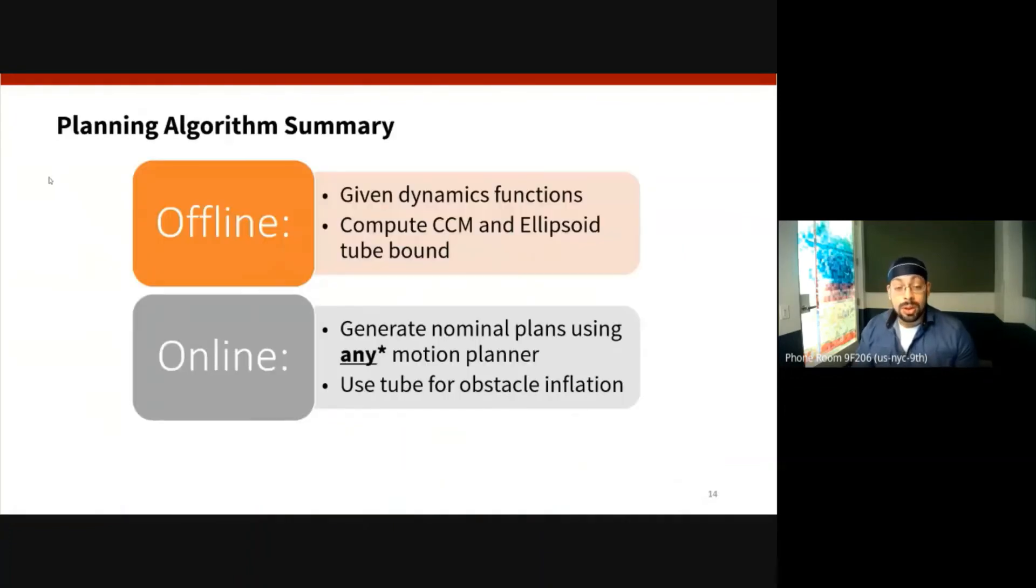So as an example, I'll actually show how this entire pipeline works, but you can roughly decompose the entire robust planning framework into two components. On the offline stage, given the representation of your dynamics, you run this offline computation of computing a CCM metric along with the ellipsoid tube bound just once computationally offline. And then online, given the metric itself and the tube bound, we can generate any nominal motion plans by using the tube bound for things like obstacle inflation and inflation of any other constraints. And now we can track these trajectories using our CCM-derived feedback controller.